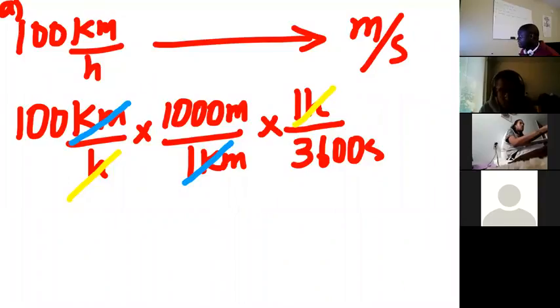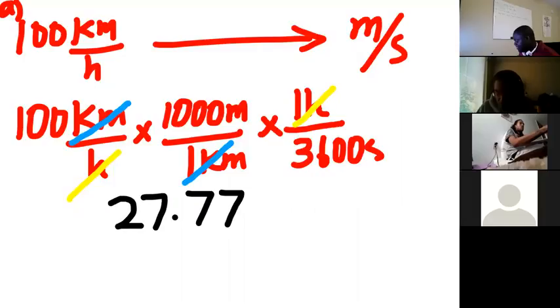What is the number? 27.7 meters per second. But pay attention to the number of significant digits in this problem. How many significant digits are there in 100 kilometers? Three. At most three.